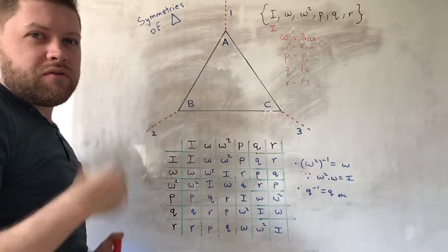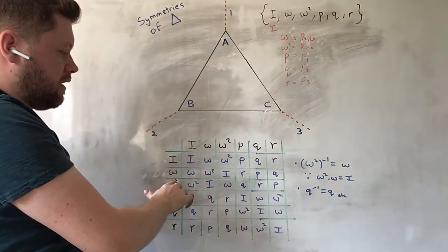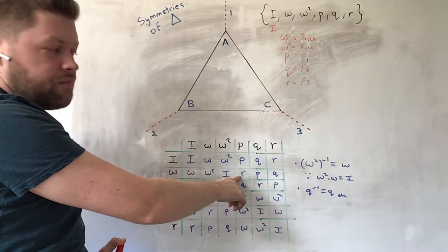It's a bit hard to see, but if you follow the logic, it's quite clear that omega and then P results in R.